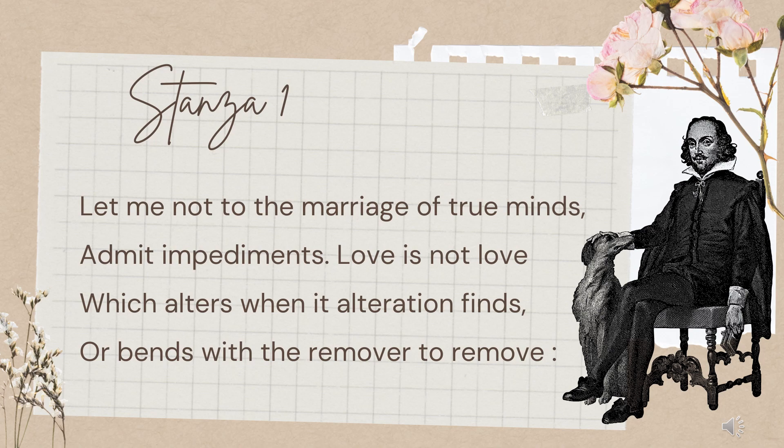It follows the tradition of the English sonnet. As you will know, there are two types of sonnets: one is the Petrarchan sonnet and another is the English sonnet. The Petrarchan sonnet is also called the Italian sonnet, which has one octave of eight lines and one sestet of six lines. The English sonnet, which is also known as the Shakespearean sonnet, has three quatrains and one couplet.